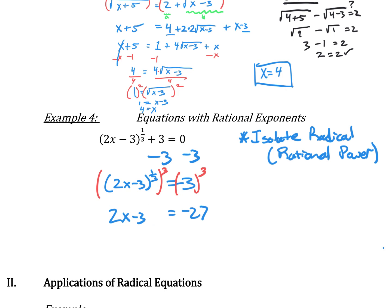Now it's a linear equation we can solve from there. Just add 3 to both sides and divide by 2, giving x equals negative 12.